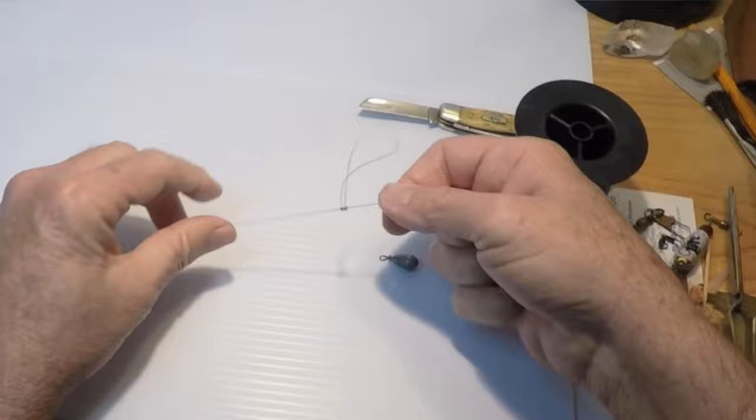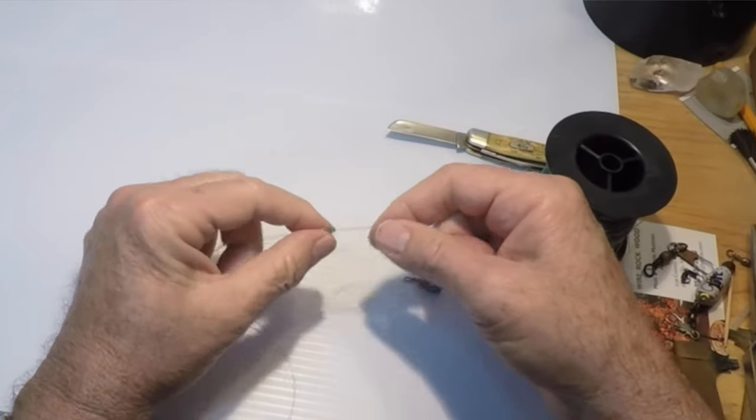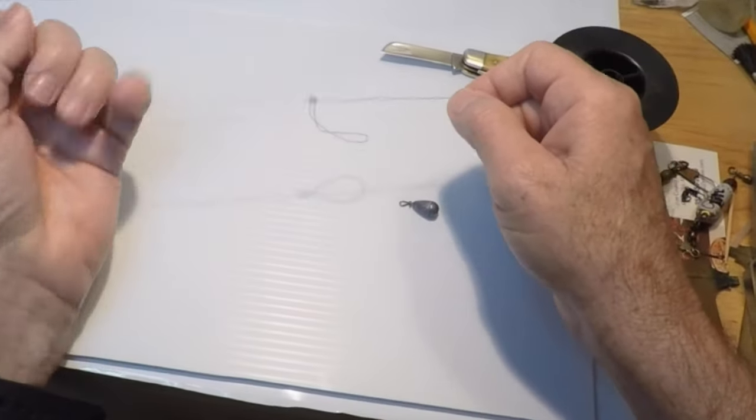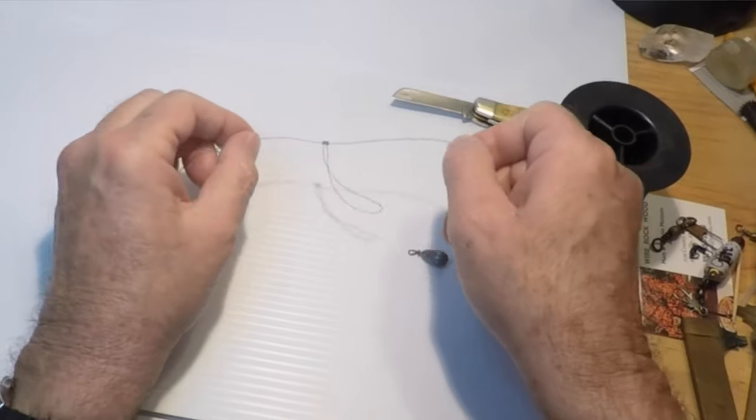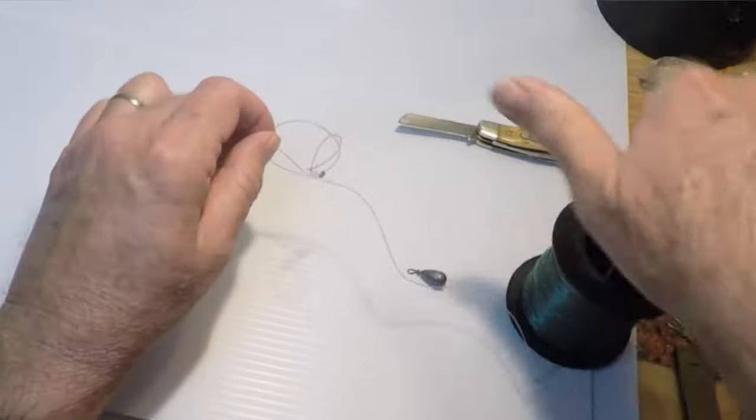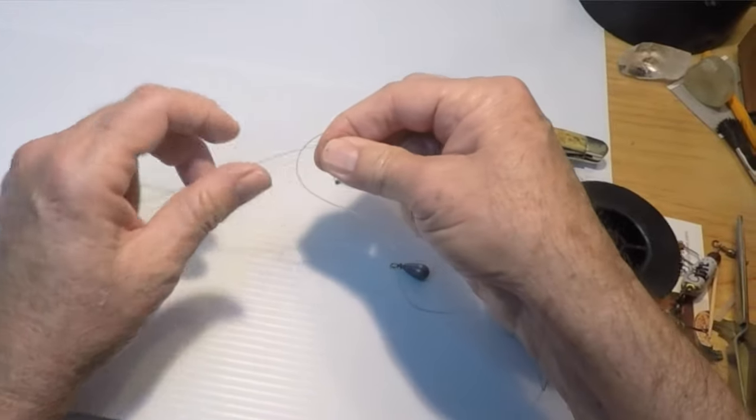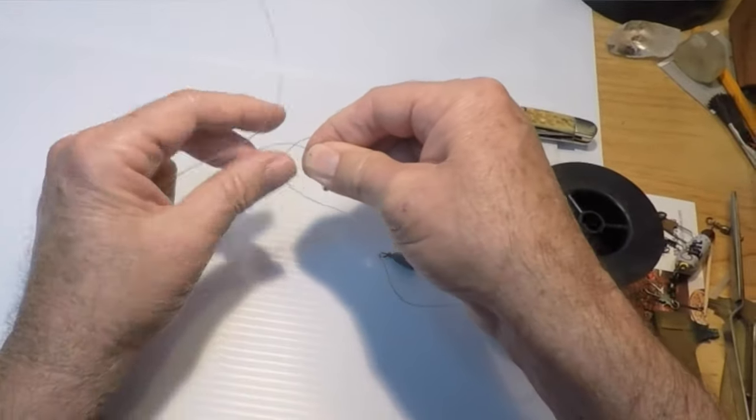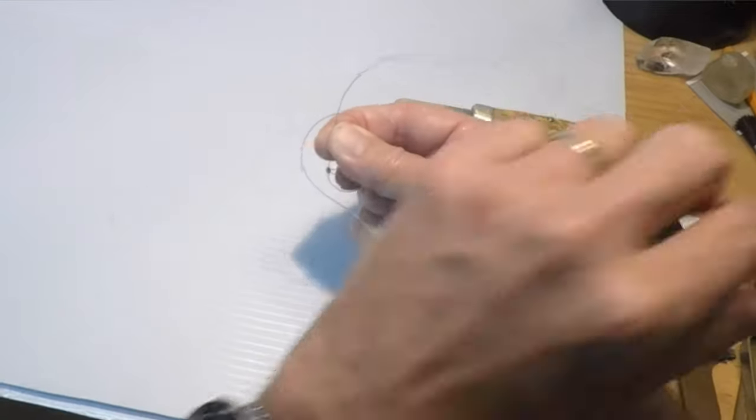It's tight and there you go. Just that quick you've done a dropper rig. Now from here you can fold that over and you can go ahead and tie a t-knot. You can do whatever you want. That was your dropper loop.